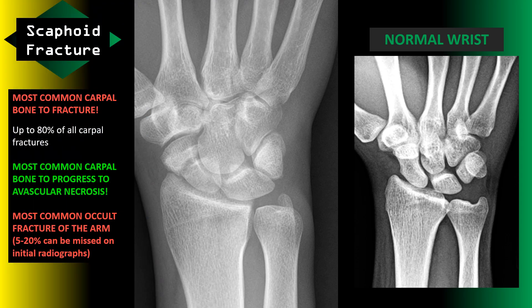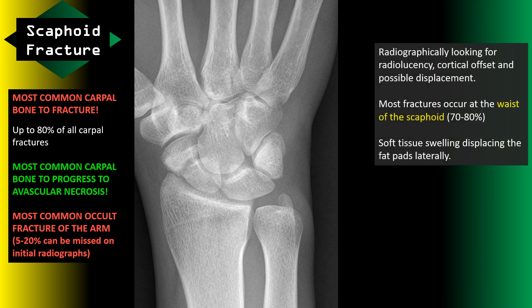The most common carpal bone to fracture is the scaphoid — up to 80 percent of all carpal fractures are of the scaphoid. Radiographically, we're looking for a radiolucency, cortical offset, and possible displacement. Most of these fractures occur around the waist of the scaphoid — around 70 to 80 percent — and sometimes you can see soft tissue swelling displacing the fat pads laterally.